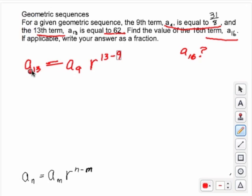Okay, so let's plug in the things we know here. A sub 13 is 62. That equals 31 over 8 times r to the 4th power.